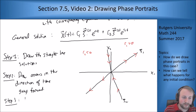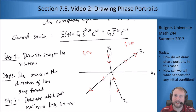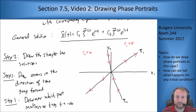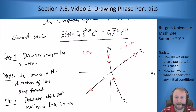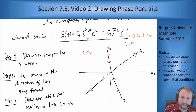Step three: determine which part matters as t goes to infinity or t goes to minus infinity. Since r₁ and r₂ are different, one of them is bigger, and as time goes to infinity the bigger one is going to matter a lot more than the smaller one. In the case where r₂ is less than zero and r₁ is greater than zero, as t goes to infinity the r₂ term goes to zero and the r₁ term gets bigger and bigger. So every solution comes closer and closer to the ξ₁ line as t goes to infinity, because the r₂ term vanishes.